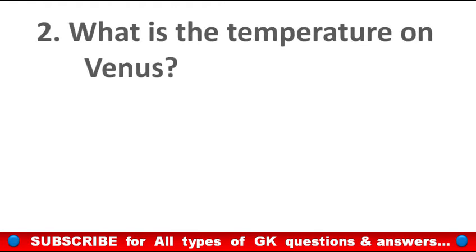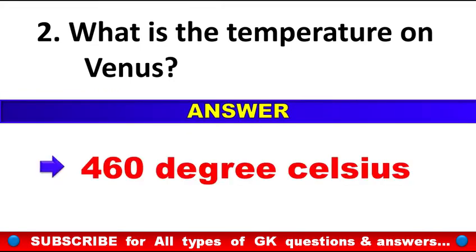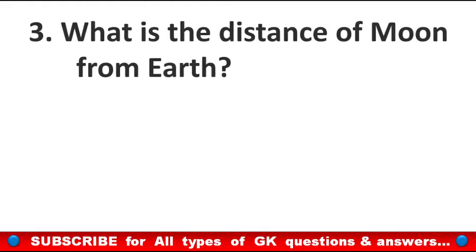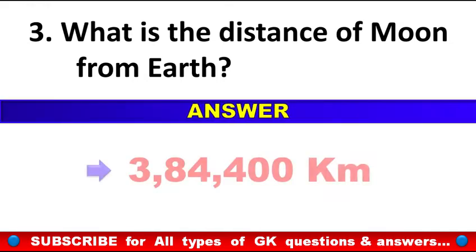What is the temperature on Venus? Answer: 460 degrees Celsius. What is the distance of the Moon from Earth? Answer: 3,84,400 km.